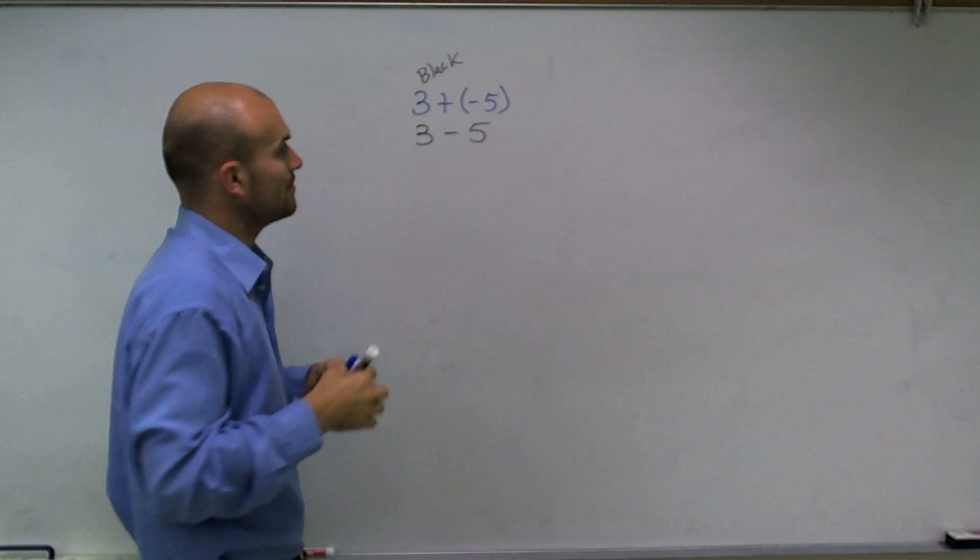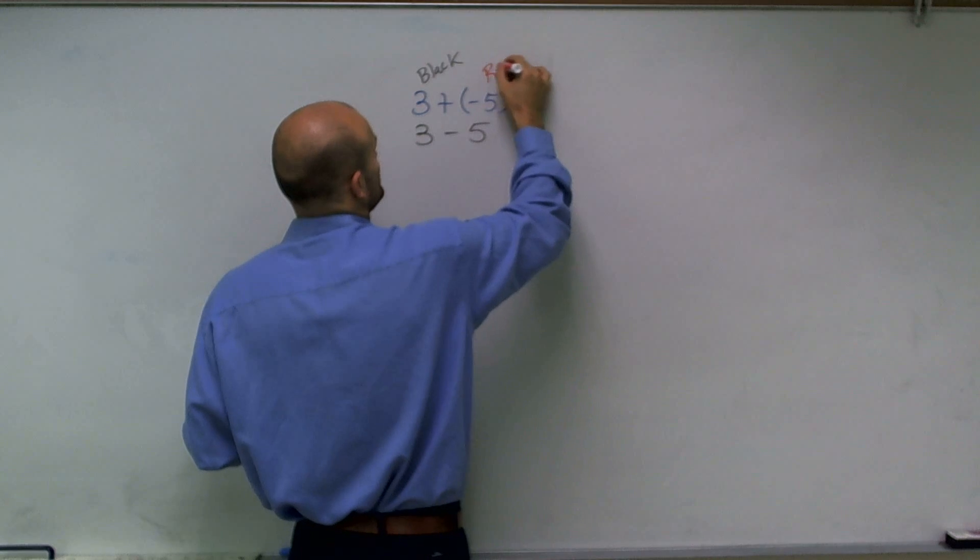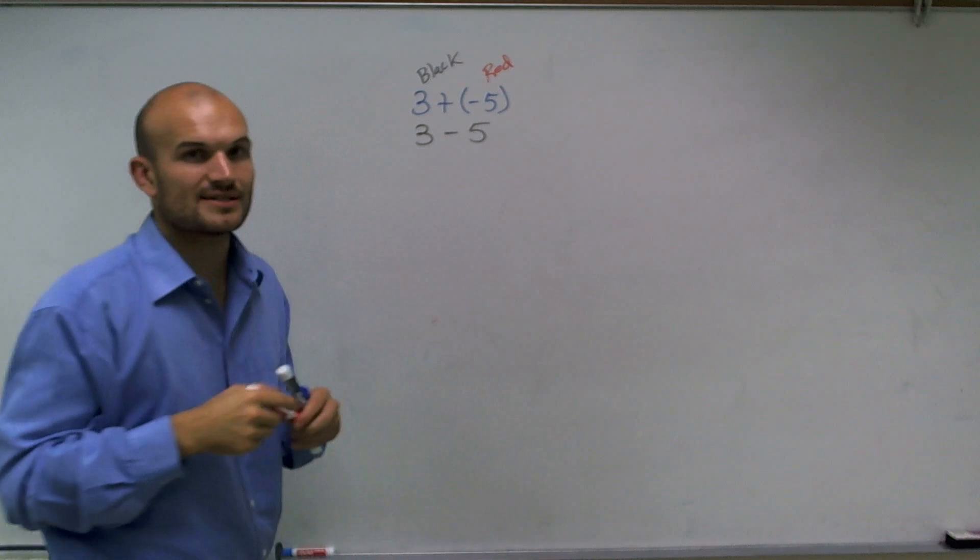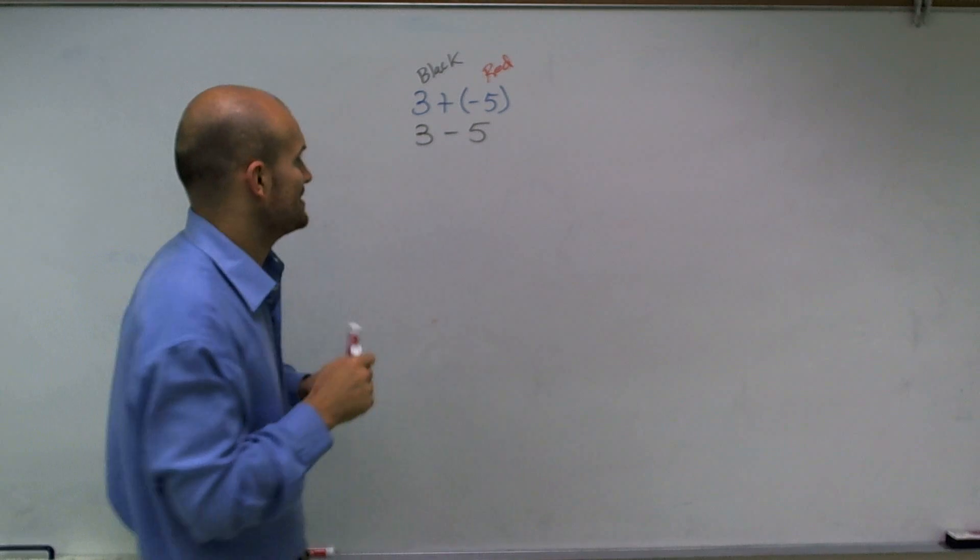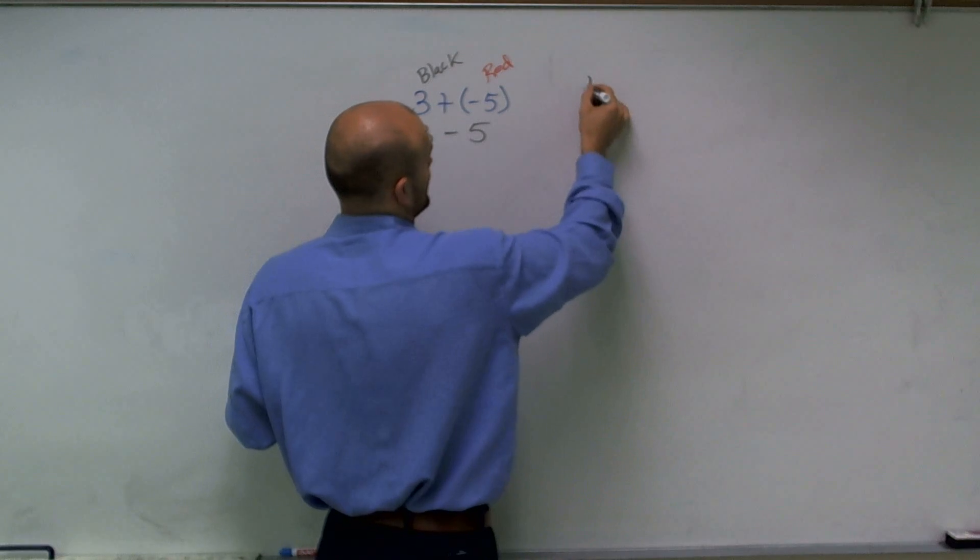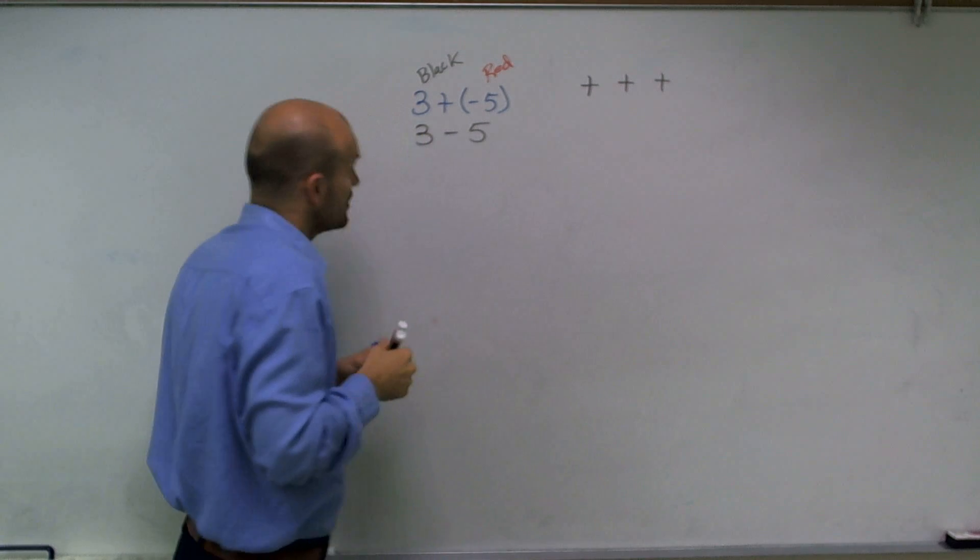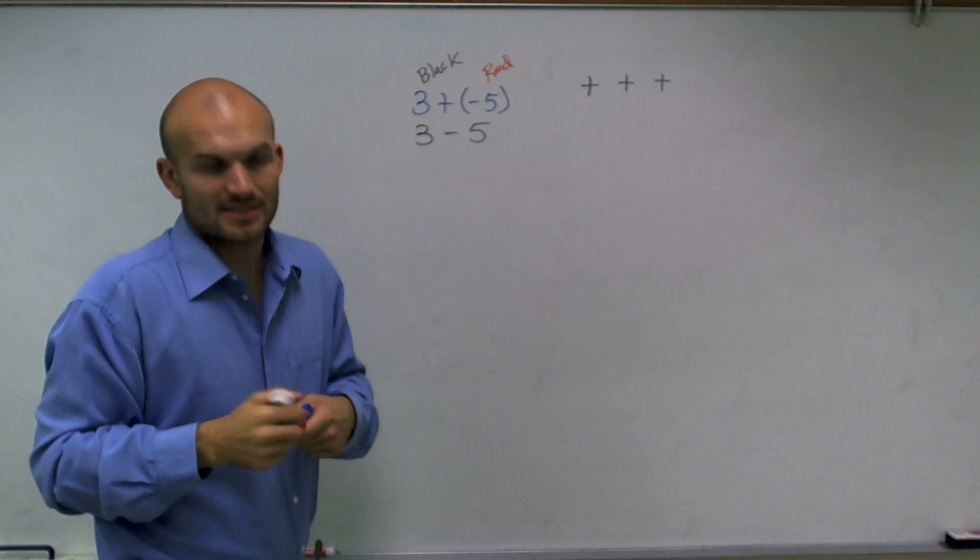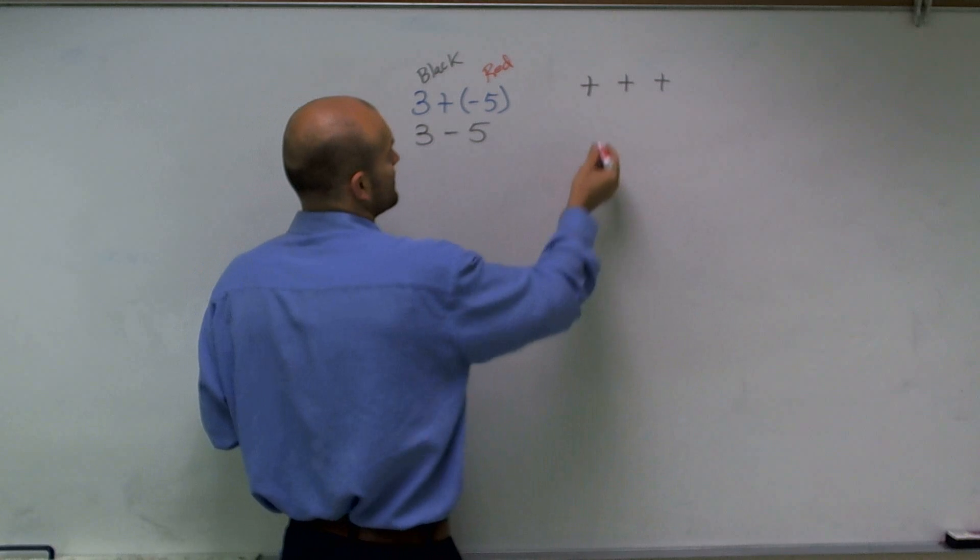and my negative numbers being red. And what I'm going to do is show you how to solve this just by using a little visual identity. So let's say I had 3. I'll just use little pluses. So I had 3 pluses and I had 5 negatives.